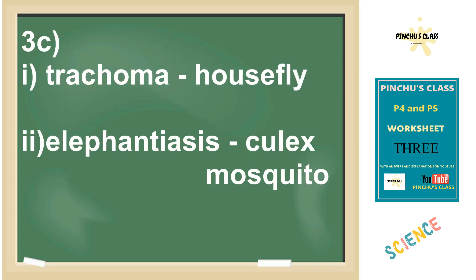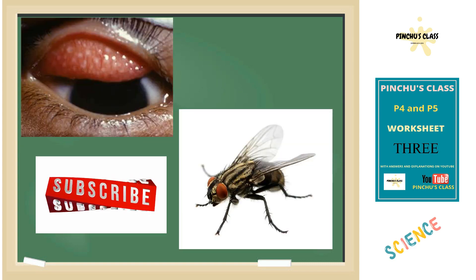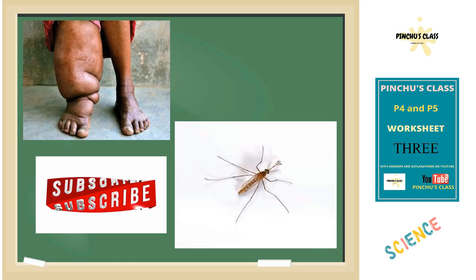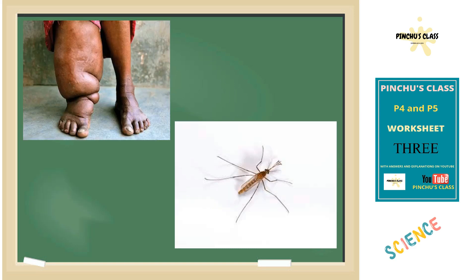Number three C: vectors that spread the following diseases — trachoma is spread by the housefly; the housefly spreads trachoma. Elephantiasis is spread by the Culex mosquito; the Culex mosquito spreads elephantiasis.